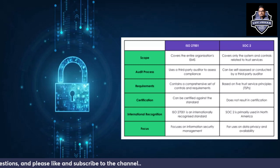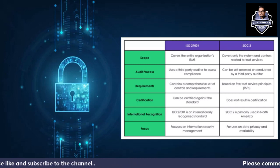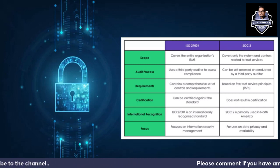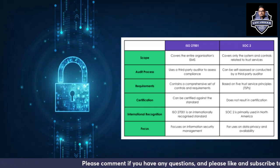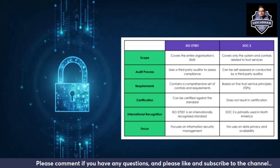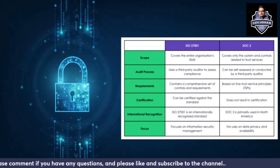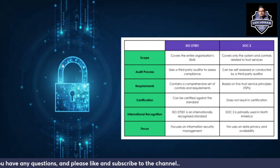ISO 27001 contains a comprehensive set of controls and requirements that need to be fulfilled, whereas SOC 2 has only Trust Services Principles and criteria. International recognition and focus areas have also been discussed.